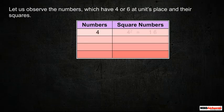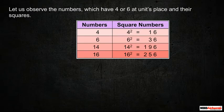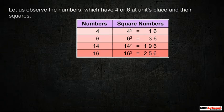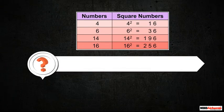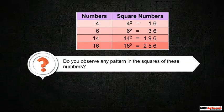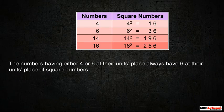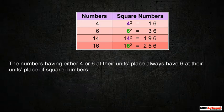Let us observe the numbers which have 4 or 6 at their unit's place and their squares. Do you observe any pattern in squares of these numbers? The numbers having either 4 or 6 at their unit's place always have 6 at their unit's place of square numbers.